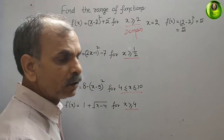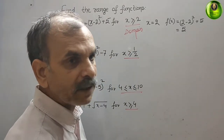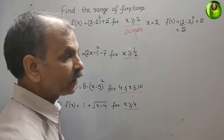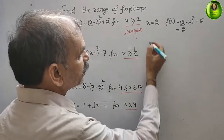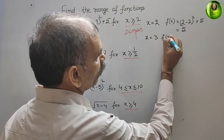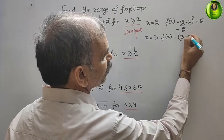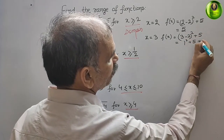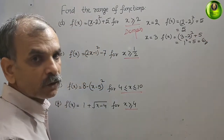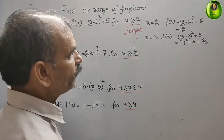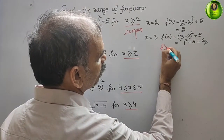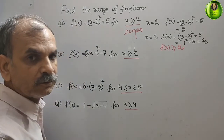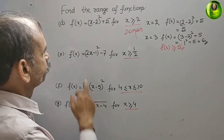From here we can assess that f(x) should be greater than or equal to 5. To verify, take x = 3: f(3) = (3-2)² + 5 = 1² + 5 = 6. The value is increasing, therefore we write f(x) ≥ 5. This is your range.